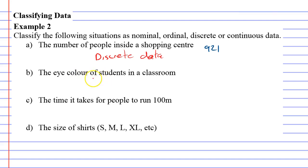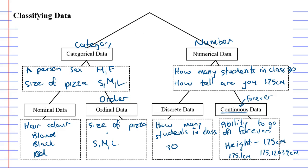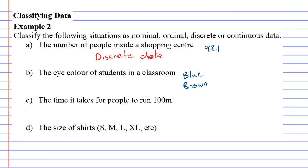The eye color of students in a classroom. So this was possibly blue, brown, and so on. So they're all lots of different colors, which tells me it's categorical. It's not a number, but it's also not ordinal. There's no order to the color of your eyes. It can be in any order. So we'll go with nominal data.